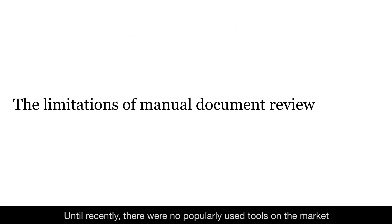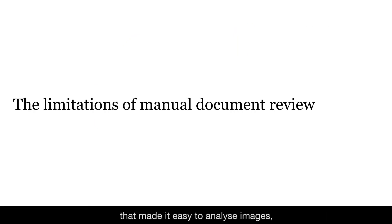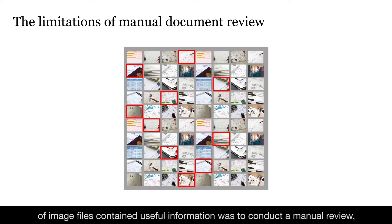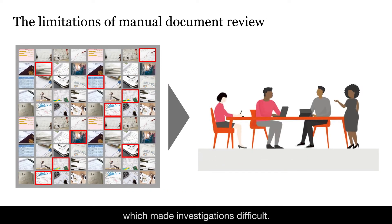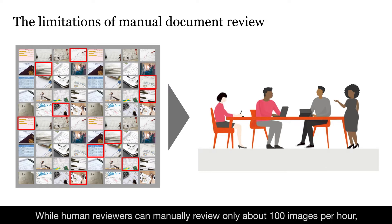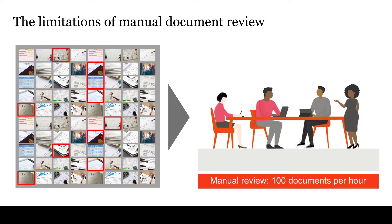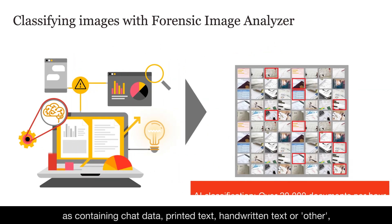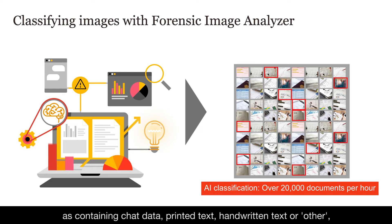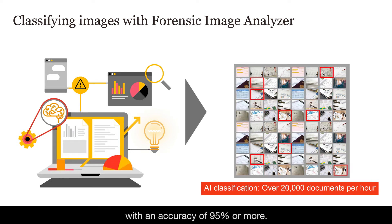Until recently, there were no popularly used tools on the market that made it easy to analyze images, so the only way to determine which of a vast number of image files contained useful information was to conduct a manual review, which made investigations difficult. While human reviewers can manually review only about 100 images per hour, Forensic Image Analyzer can classify more than 20,000 images per hour as containing chat data, printed text, handwritten text, or other, with an accuracy of 95% or more.